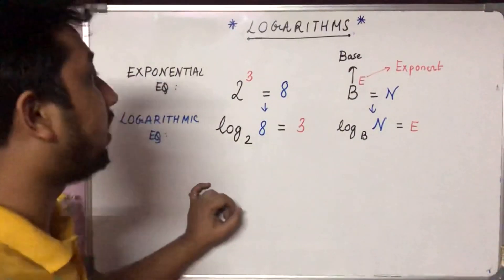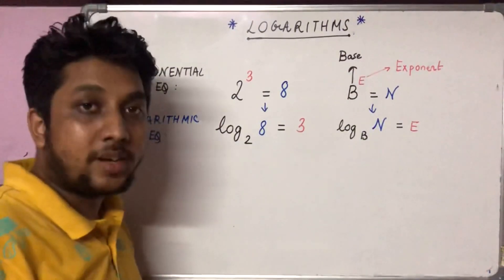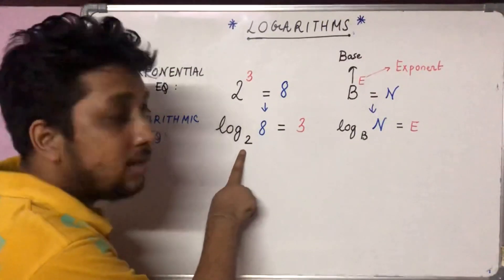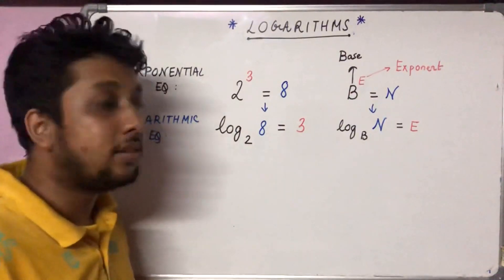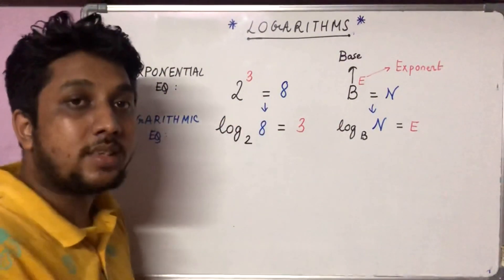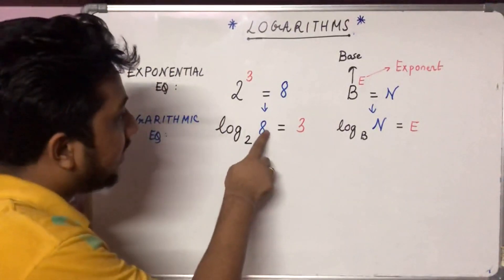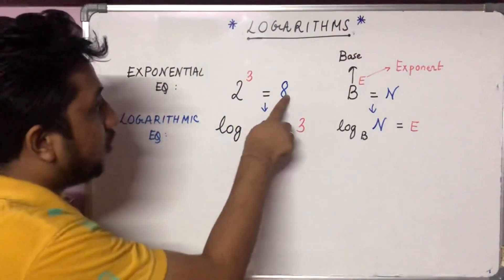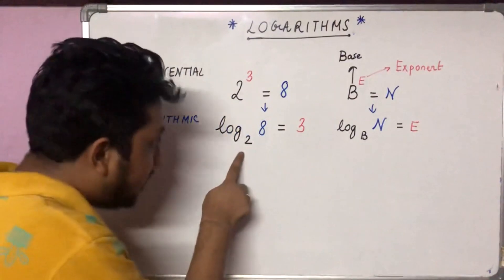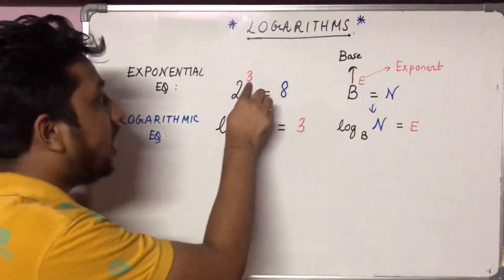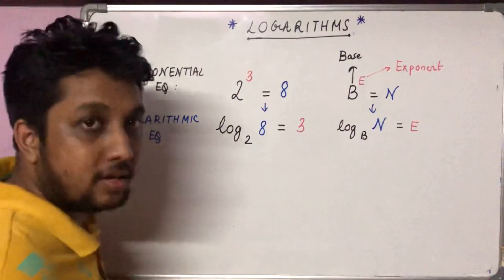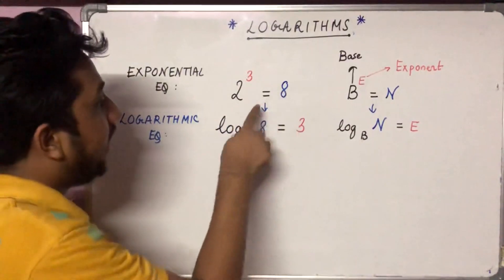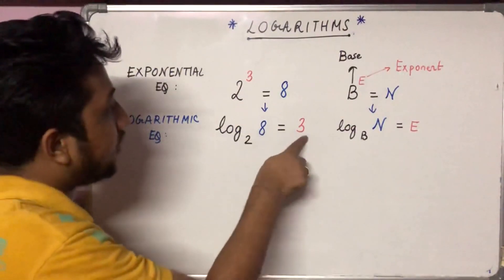Now we convert to logarithmic form. Log is basically an operator which operates with respect to the base, and the answer we get is in the form of the exponent. So log of eight to the base two equals three — because two to the power three equals eight. The result of a log operation is the exponent.